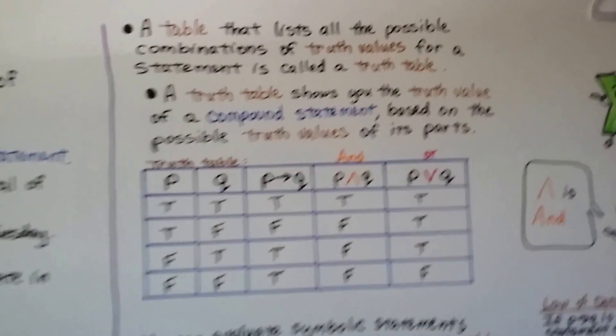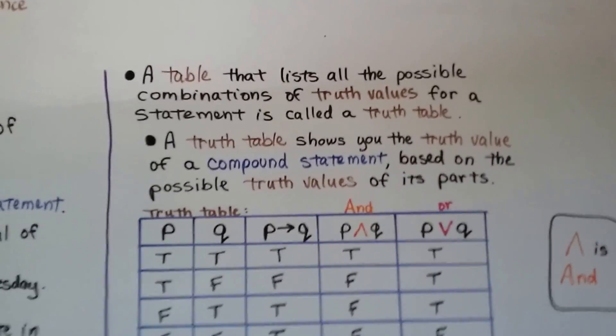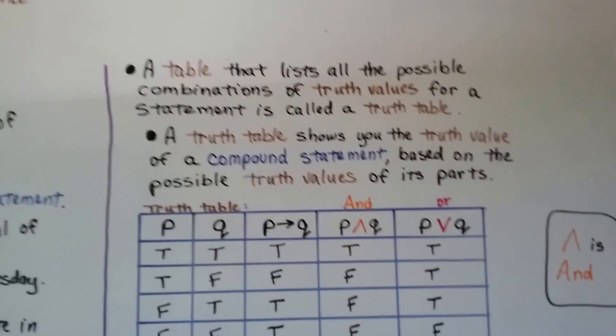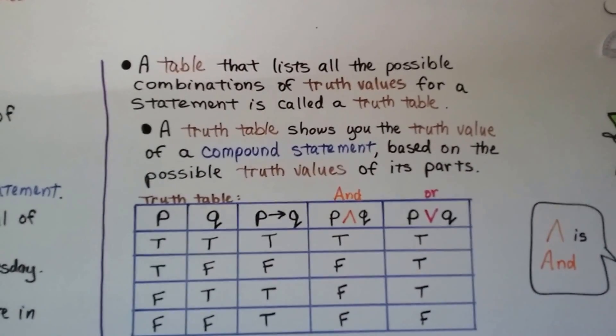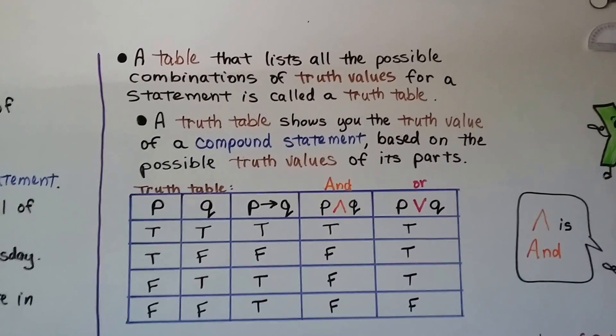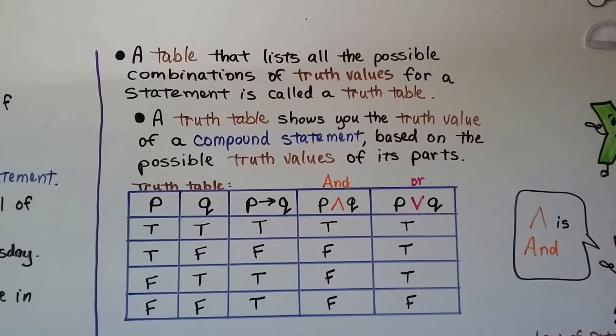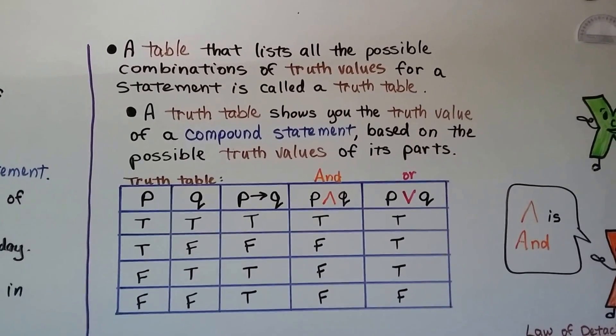A table that lists all the possible combinations of truth values for a statement is called a truth table. A truth table shows you the truth value of a compound statement based on the possible truth values of its parts.